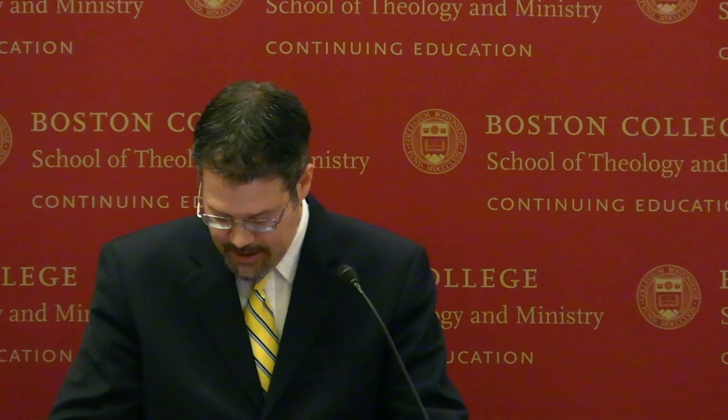Consider Tertullian, writing at the end of the second and beginning of the third century. In his work against Marcion, he refers to a passage from the prophet Ezekiel: 'The Lord said unto me, pass through in the midst of Jerusalem and set the mark tau on the foreheads of the men' — Ezekiel 9:4. 'For this same letter tau of the Greeks, which is our T, has the appearance of the cross, which he foresaw we should have on our foreheads in the true and Catholic Jerusalem.' The mark on the foreheads is a letter, the letter is a tau, and the tau has the appearance of the cross.